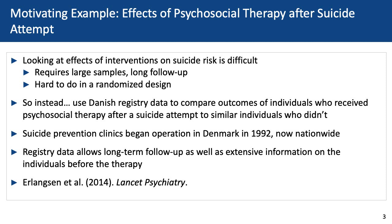Let's talk about that motivating example. In some ways this is a best-case scenario in terms of data availability, which is both good and bad for pedagogical purposes, but I think it will provide a nice example of how to do a propensity score analysis. This example was looking at the effects of psychosocial therapy after suicide attempt. Looking at the effects of interventions on suicide risk is quite difficult — it requires very large samples, a very long follow-up, and is really hard to do in a randomized design. So this is a context where strong non-experimental studies are a very nice alternative. What we did was use amazing Danish registry data to compare outcomes of individuals who received psychosocial therapy after a suicide attempt to similar individuals who hadn't received that therapy.